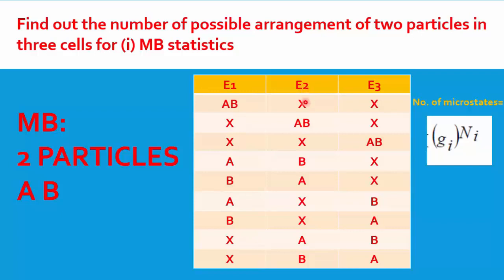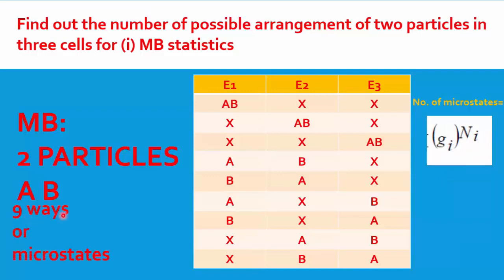This number nine can also be calculated using the formula g^n, where g is the number of quantum states — here the three cells, so g = 3 — and n is the number of particles, so n = 2. Substituting: 3² = 9. So using either the tabulation or this formula, you get nine microstates for Maxwell-Boltzmann statistics.